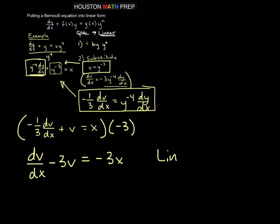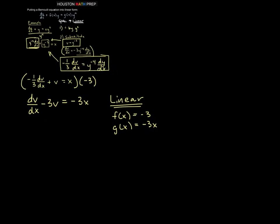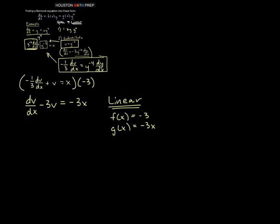And now this is exactly in linear form, the way we usually think of it. And so here f(x) is equal to negative 3, and g(x) is equal to negative 3x, if you're very familiar with linear. And so the next step here would then be to most likely find an integrating factor. So our integrating factor will be equal to e to the integral of f(x), which is negative 3. So that will give us the integrating factor is e to the minus 3x. So we take the entire equation here, and we multiply by our integrating factor.